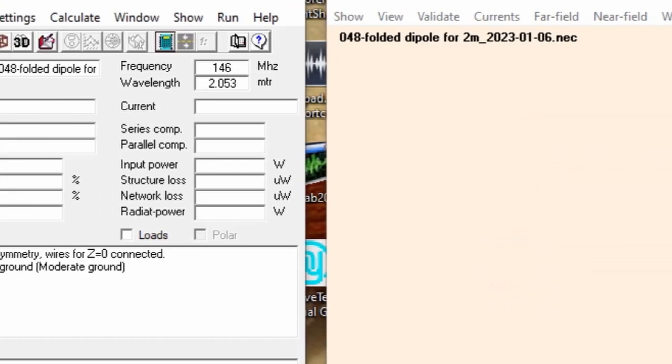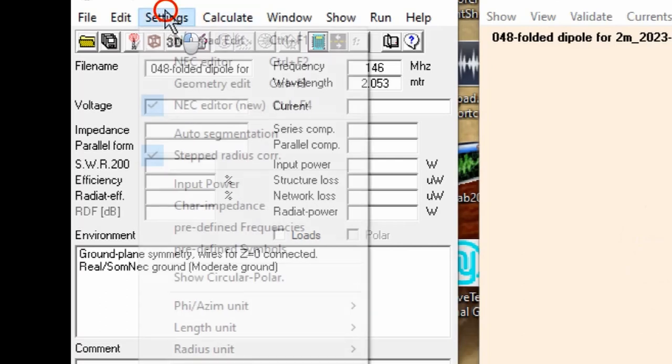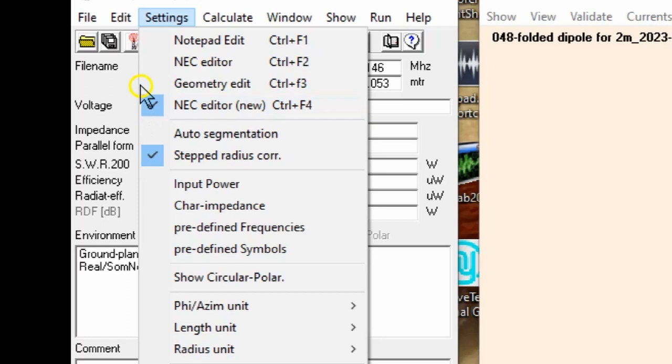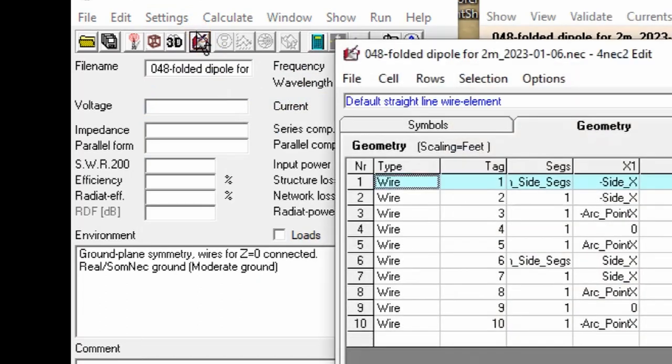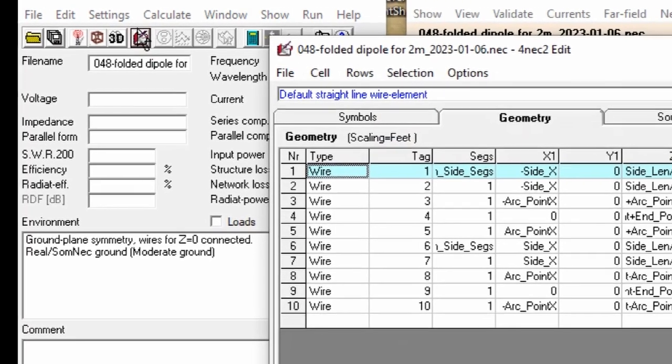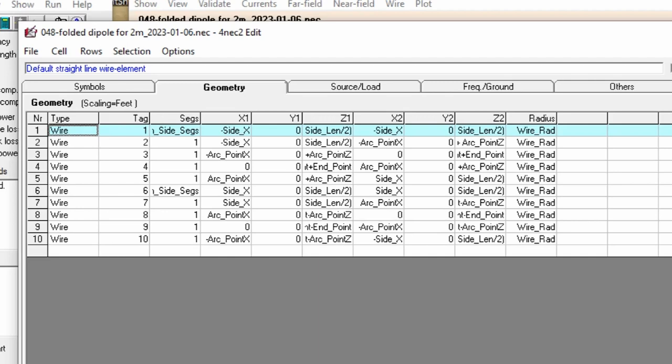So that we're looking at the same thing, let's set the editor to the new NEC editor. Again, in the main window, click on the settings menu item and then select the NEC editor new option in the drop down menu. Now we open the model. Click on the editor icon. The model will open in the geometry tab.